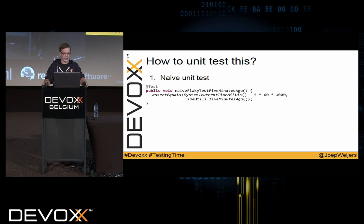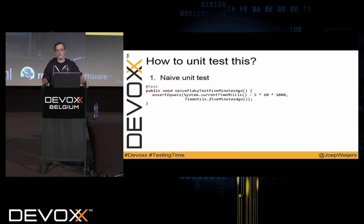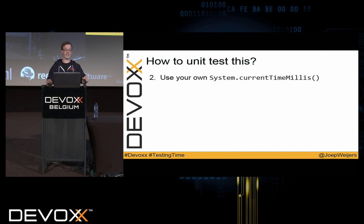The second problem is that this is a flaky test. There might be one or more milliseconds difference between the evaluation of the expected and the actual result, so this test would fail once in a while. As any self-respecting developer, I typed into Google how to test System.currentTimeMillis, ended up on Stack Overflow, and the answer is: don't use it. Use your own implementation of System.currentTimeMillis.